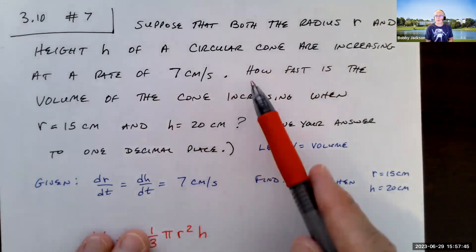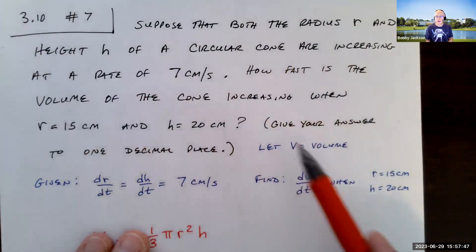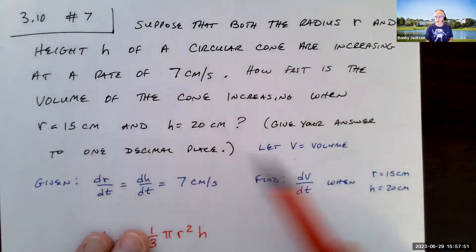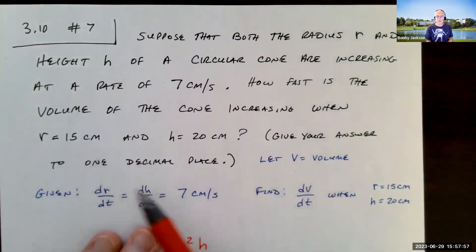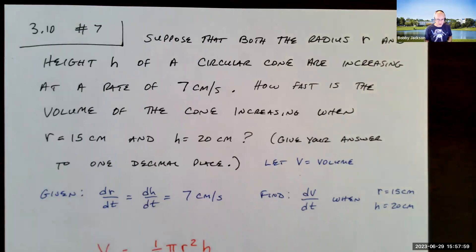And we're to find how fast is the volume of the cone increasing. So we're going to find dV/dt when r is 15 centimeters and h is 20 centimeters. So what's the equation that relates our variables V, r, and h together? It's just the volume of a cone.